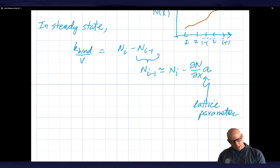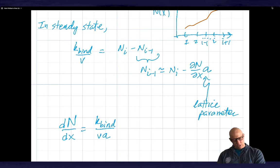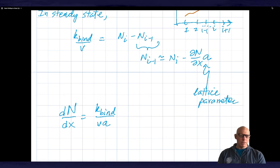So what do we get from that? We get that dn by dx is equal to k_bind over v a. Let's check the units here. So on the left hand side, I have units of one over length. Let's just make sure that that's true on the right hand side. So I said that v has units of one over time, k_bind has units of one over time, and a has units of length. And so that ends up giving me a one over length on the right hand side as well.